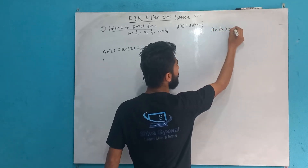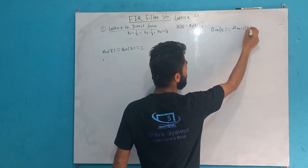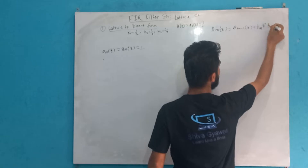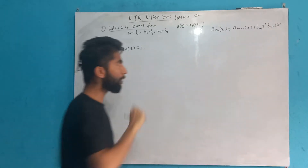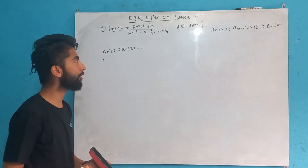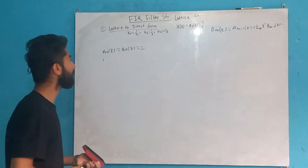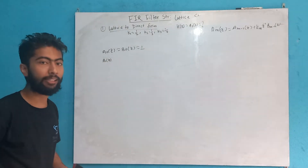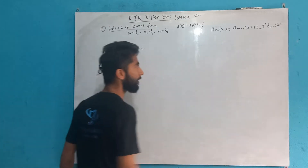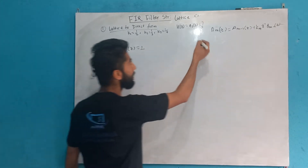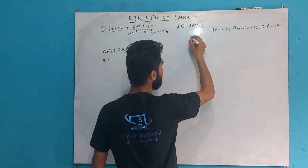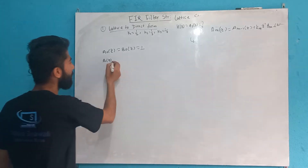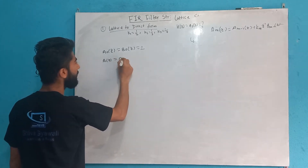A0z — what is the name? A0z plus Km z-inverse Bm-minus-1 z. Okay? We can use this form. We can also use A1z, A2z. We can use A1, A2, B0, B1, B2 with A1z.